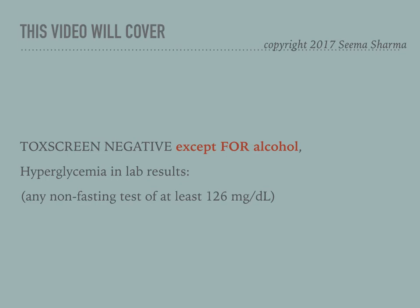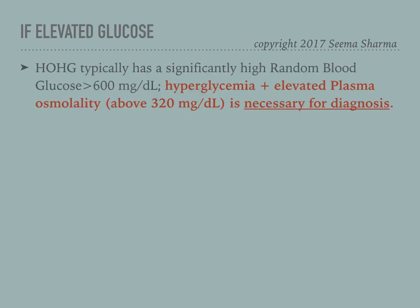This video covers the case where the tox screen is negative for everything except alcohol and you have hyperglycemia in the lab results. Hyperglycemia on a non-fasting test is at least 126 mg/dL. If you have hyperglycemia plus elevated plasma osmolality above 320 mg/dL, the diagnosis is HHS. Patients with HHS tend to have very high random blood glucose — typically above 600 mg/dL — but even 500 mg/dL with elevated plasma osmolality still qualifies as HHS.